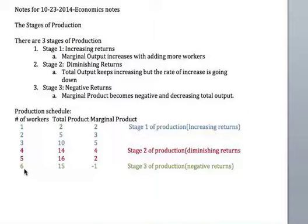When you add the sixth worker you move into negative returns — total product drops to fifteen, giving you a marginal product of negative one. Once you're in the negative numbers you're in negative returns. Hopefully this helps, because you will have to do this on the test on Friday.